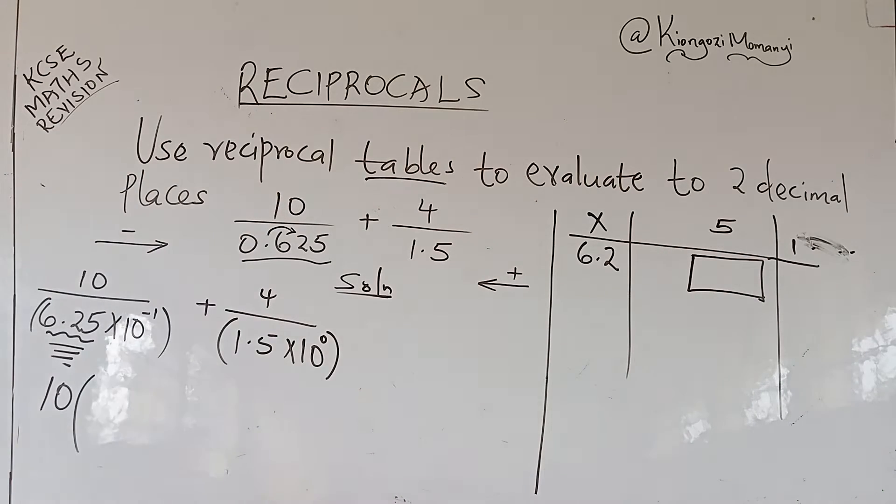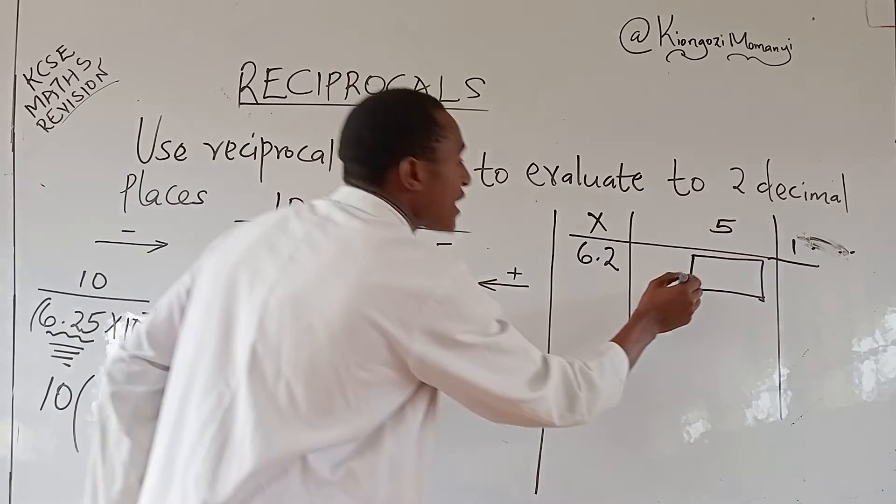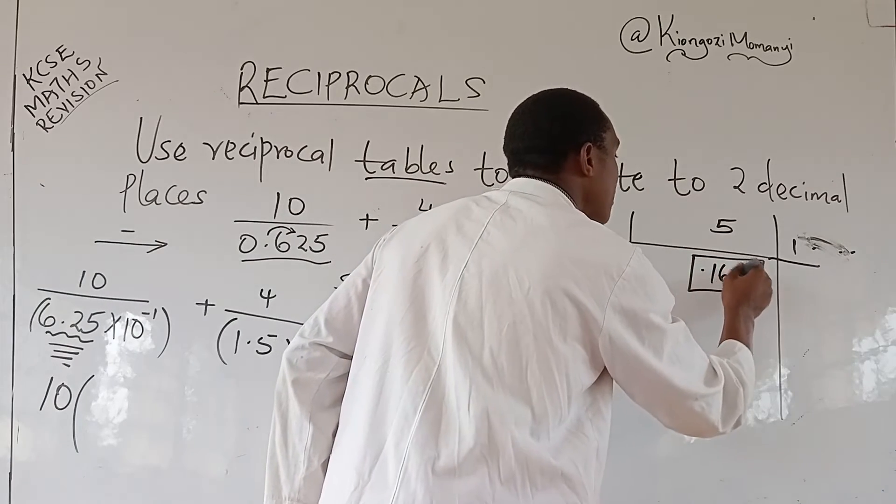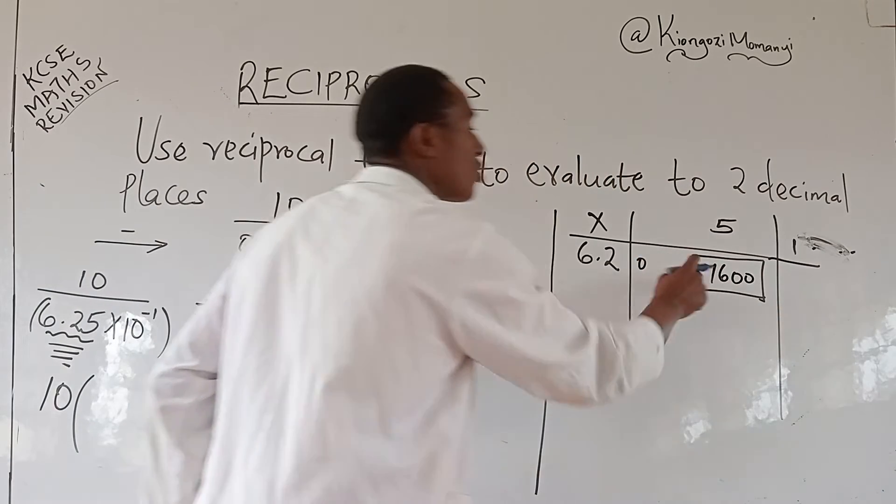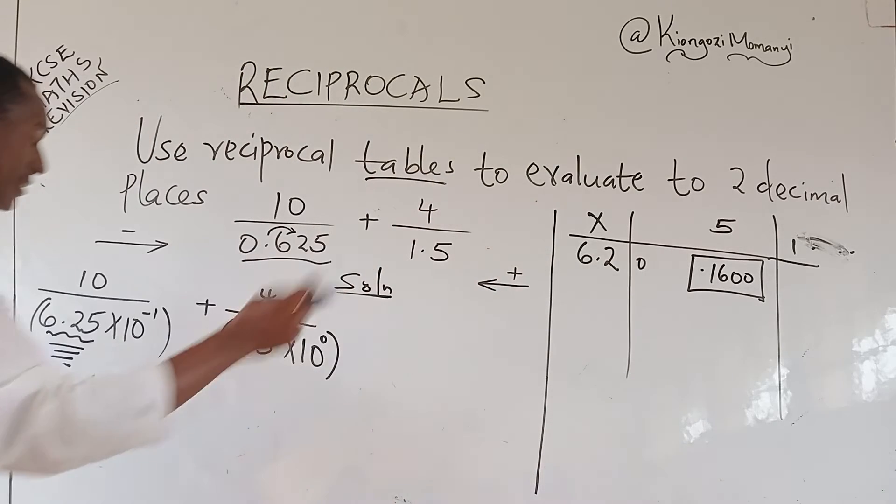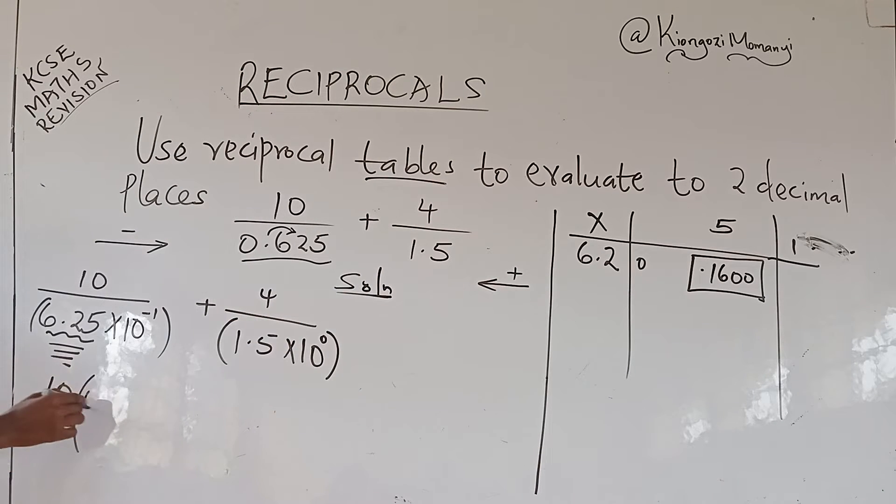So when I use my table, I get 0.1600. At this point, I have 0.1600. And of course here, 0.1600. So I write it here, 0.1600 as the reciprocal of 6.25 read from the table.